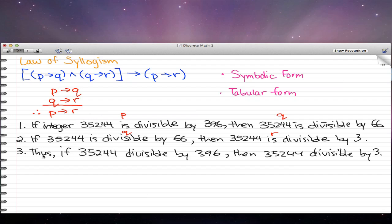So thus, if 35,244 is divisible by 396, then 35,244 is divisible by 3. So that's pretty much P and this is pretty much R. If this implies that and that implies this, then why can't we just get rid of the middleman and do P implies R? That's the idea behind that.